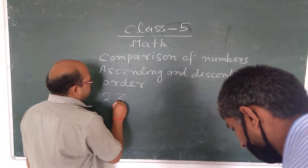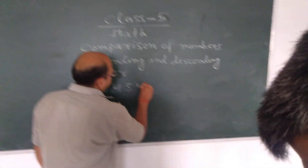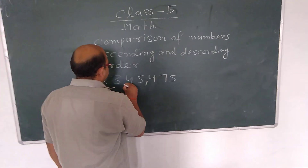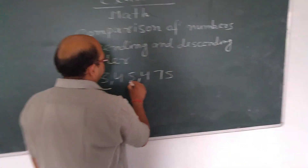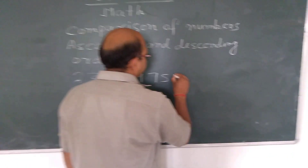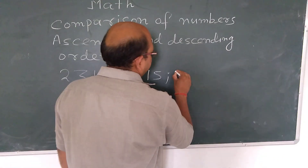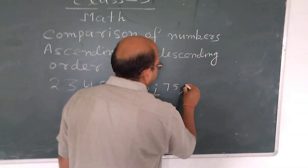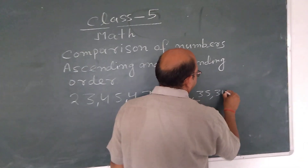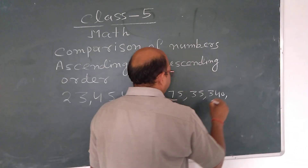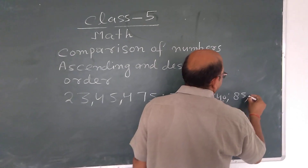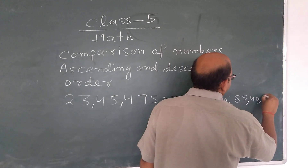For example, the numbers are: 23,45,475 and 75,05,340 and 85,000 and 40,230.